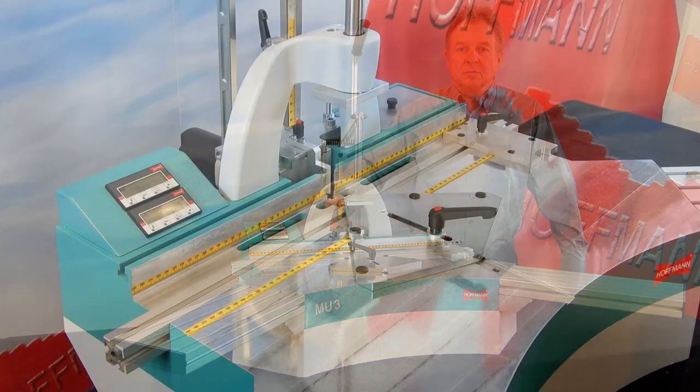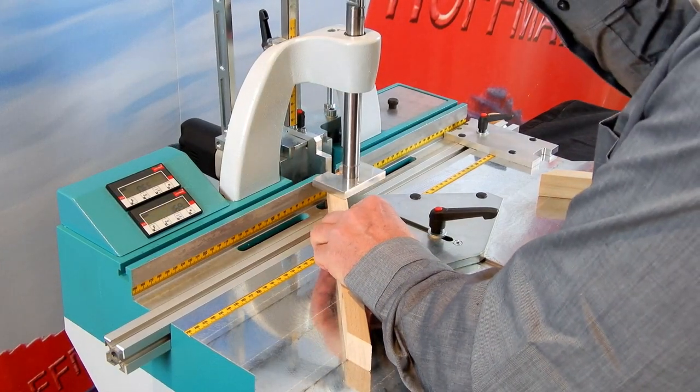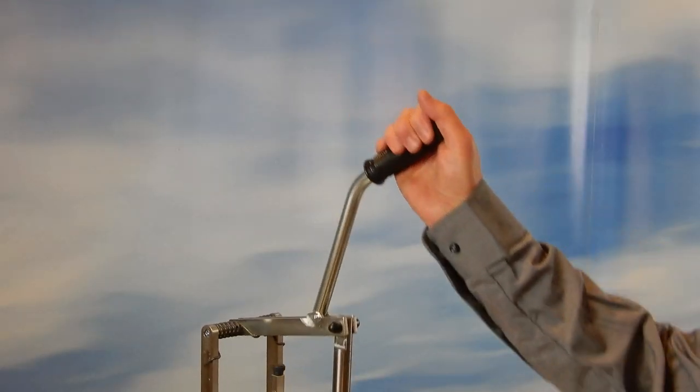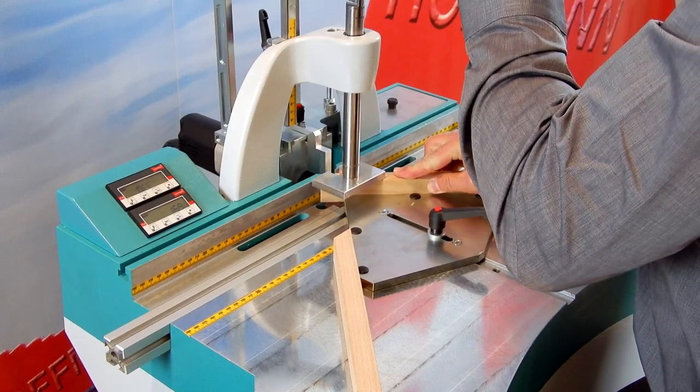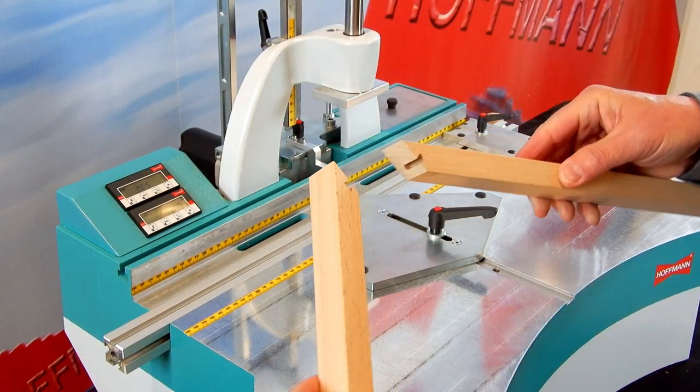It is equipped with a carbide dovetail bit installed in a router motor. When I pull this lever down, my material is being pressed onto the table and the router bit moves up and cuts the dovetail keyway into the end of my molding.